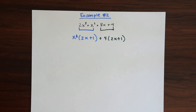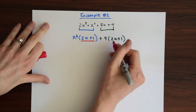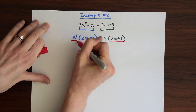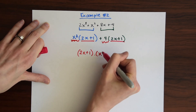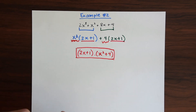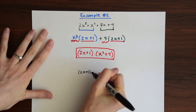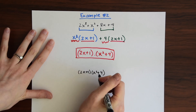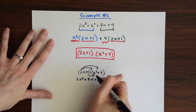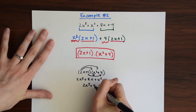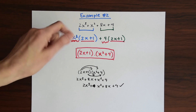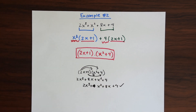Again, notice we have these common factors — we have a 2x plus 1 and another 2x plus 1. So we know that's going to be part of our answer as a common factor. And then left over we have x squared plus 4, so we just add that on. So our answer is (2x plus 1)(x squared plus 4). To check our answer, we're just going to distribute or FOIL or use the box method, whatever you prefer. Putting them in order — yes, this checks out: 2x cubed, x squared, 8x, and 4. So we have our answer.